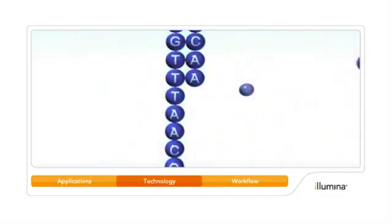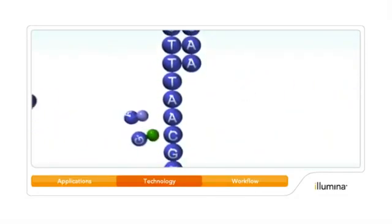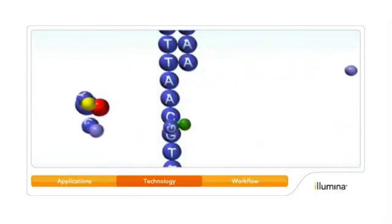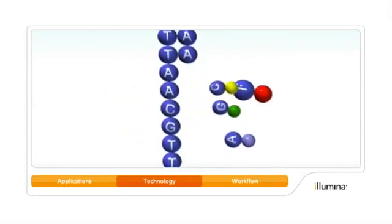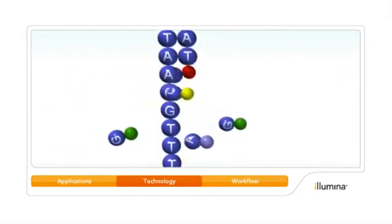The fluorescent label and blocking group are then removed, allowing for the addition of the next base. This proprietary chemistry reads a single base in each cycle, enabling accurate sequencing through difficult regions such as homopolymers and repetitive sequences.